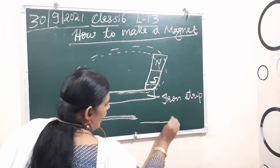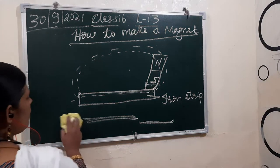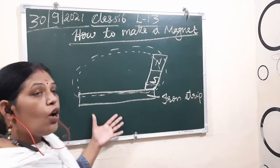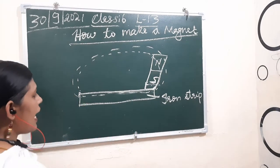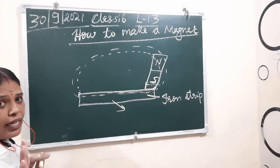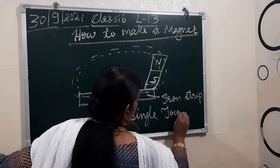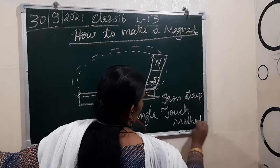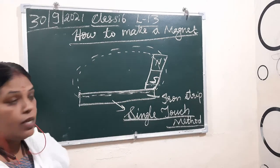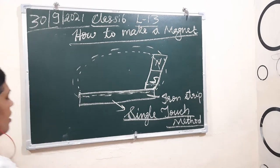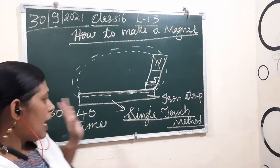You should rub in one direction only — from one side only, lift it, and again come back to the starting position to rub again. You cannot rub both ways. Only one-sided rubbing gives the iron magnetic power. Since we are giving only one touch in one direction, this method is known as the single touch method.